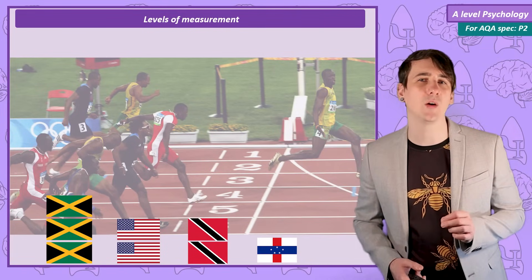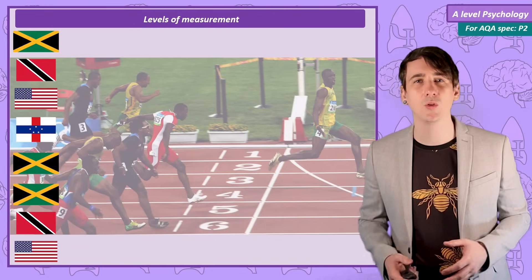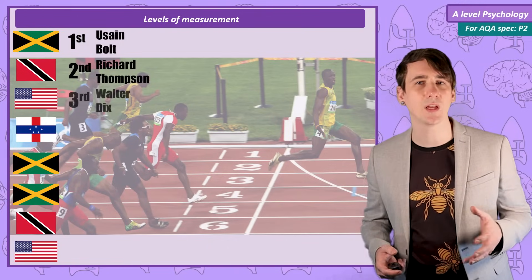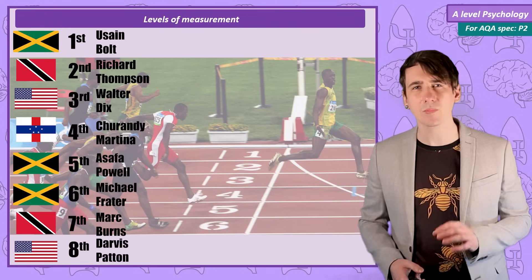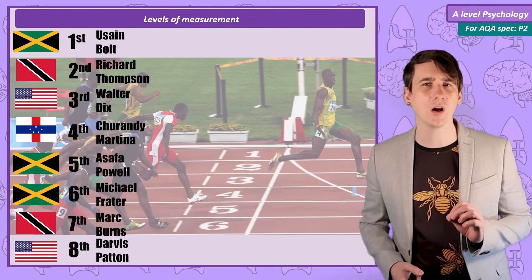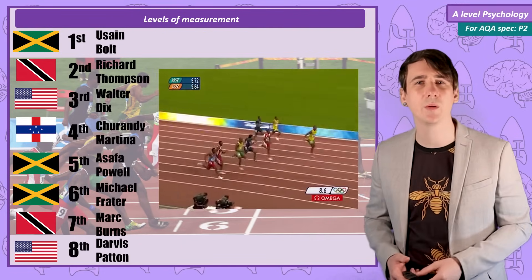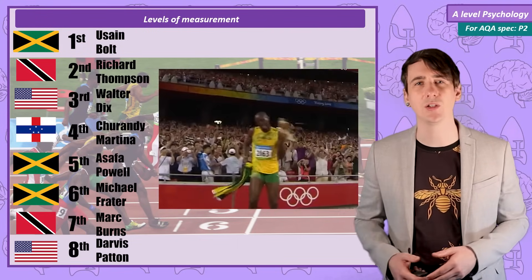With ordinal data we could say the order in which the runners finish the race. Usain Bolt came first for gold and then Richard Thompson with the silver, then Walter Dix with the bronze and you can continue down from rank one all the way to rank eight. Now of course what this data can't tell you, the story of the race, that you can see very clearly in this image is Usain Bolt absolutely destroyed the competition. For all you would know from the ordinal data there was an equal distance between each runner.